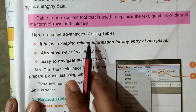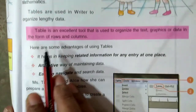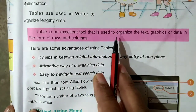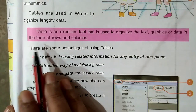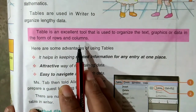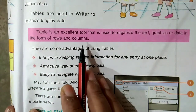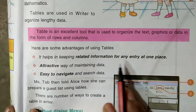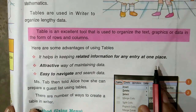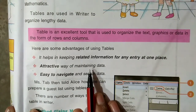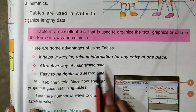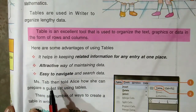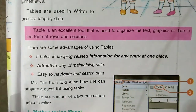Now, here are some advantages of using tables. Tables are an excellent tool used to organize text, graphics, or data in the form of rows and columns. It helps in keeping relative information for many entries at one place, providing an attractive way of maintaining data and making it easy to navigate and search.